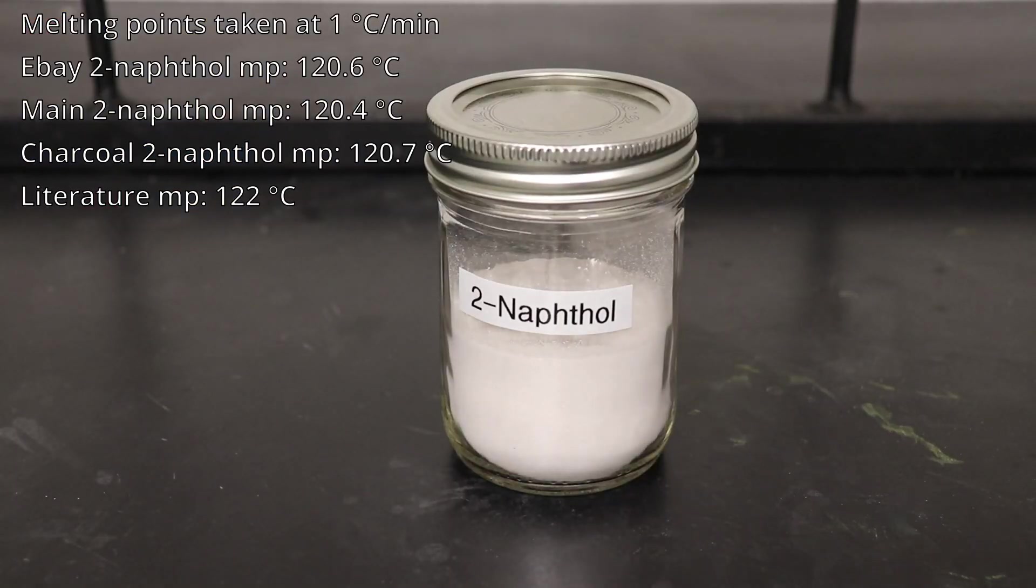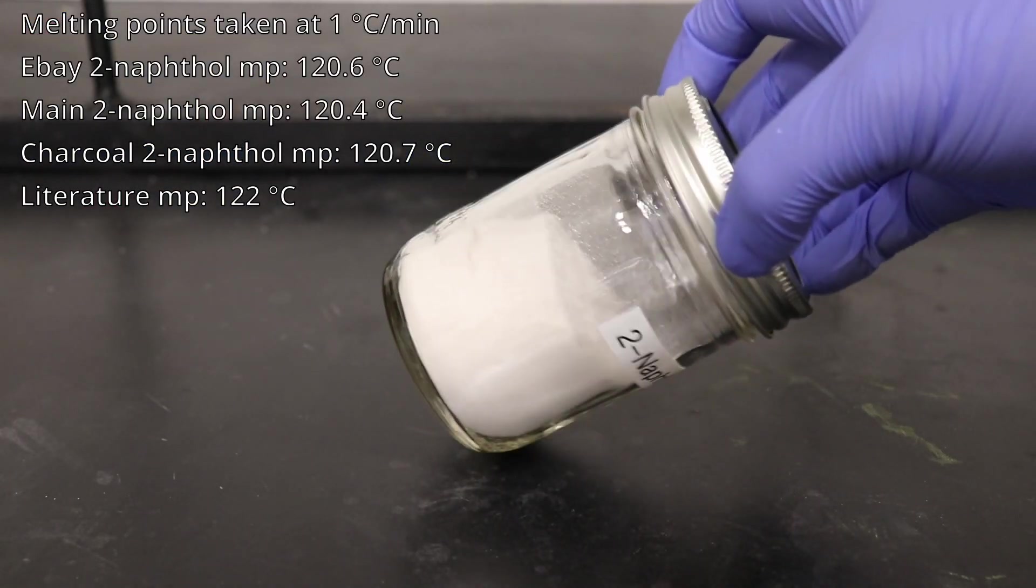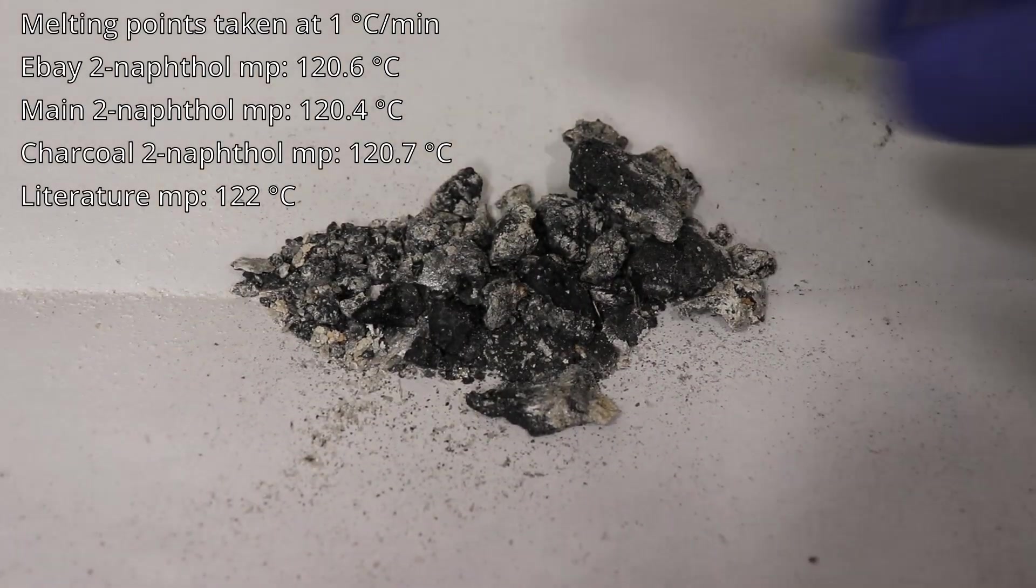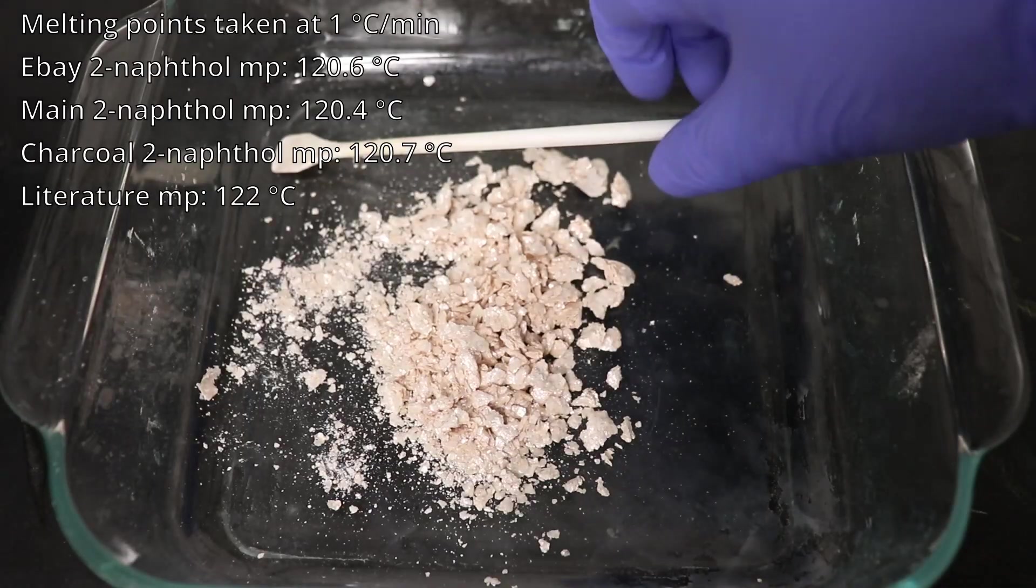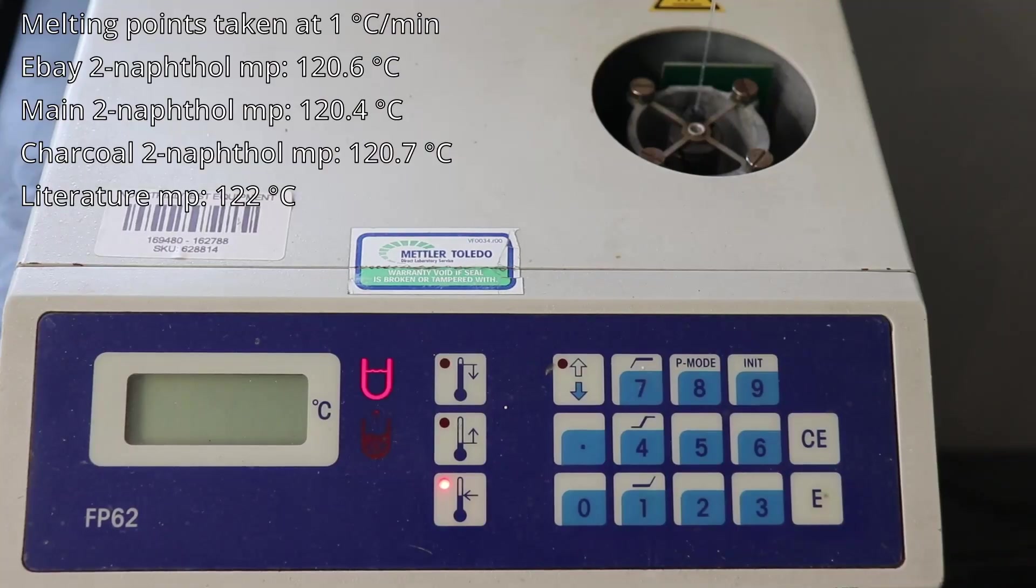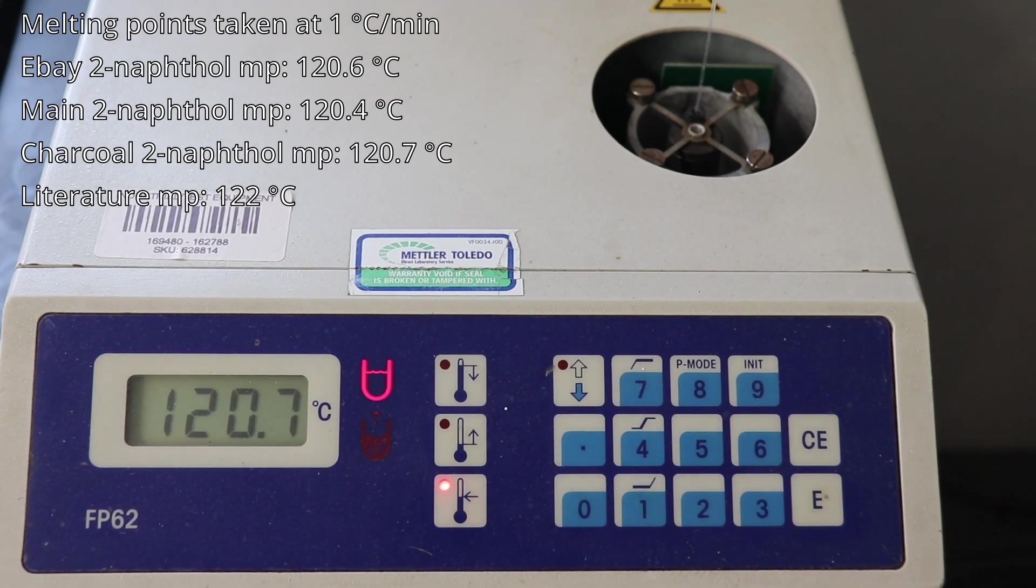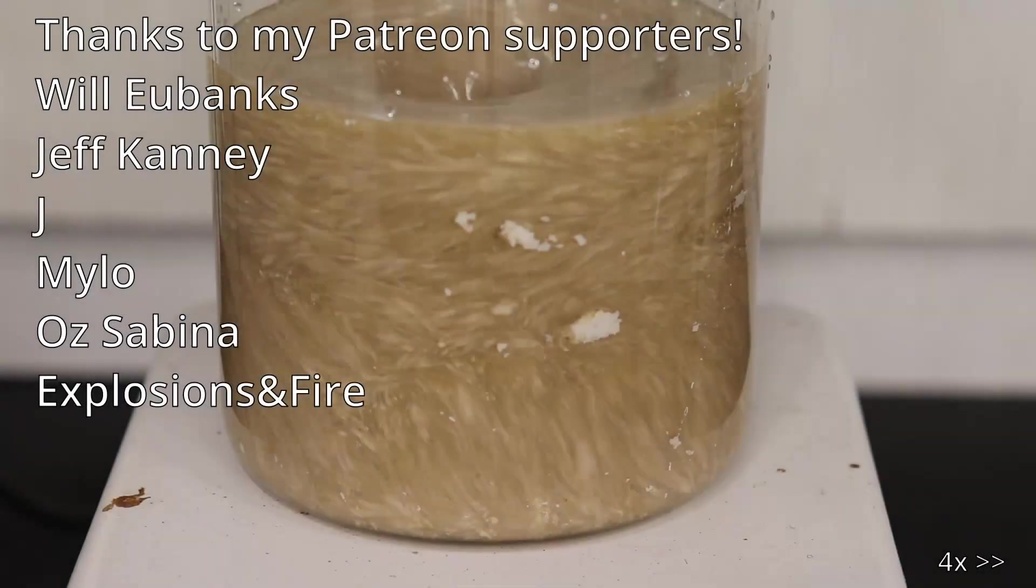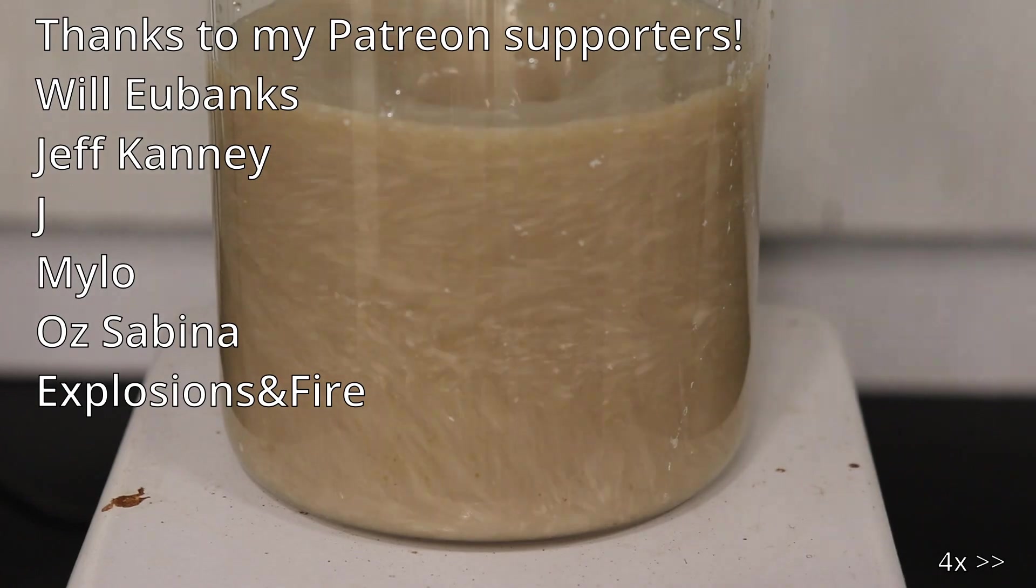The main batch with our 38.5 grams of 2-naphthol melted at 120.4 degrees Celsius, which isn't too far off from the literature value and almost exactly matches our reference. The 2-naphthol from the charcoal is even closer to theoretical and to the reference sample at 120.7 degrees Celsius. And from these results, we can be confident that we have made 2-naphthol and that it is of decent purity.